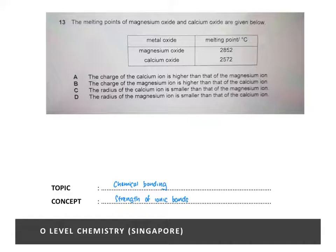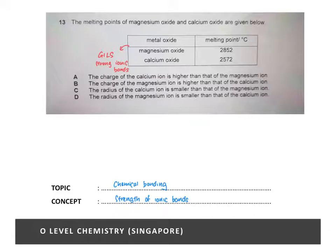Both magnesium oxide and calcium oxide have giant ionic lattice structures, with strong electrostatic forces of attraction between oppositely charged ions — these are your ionic bonds. The difference in melting point must therefore be due to the difference in the strength of the ionic bonds.